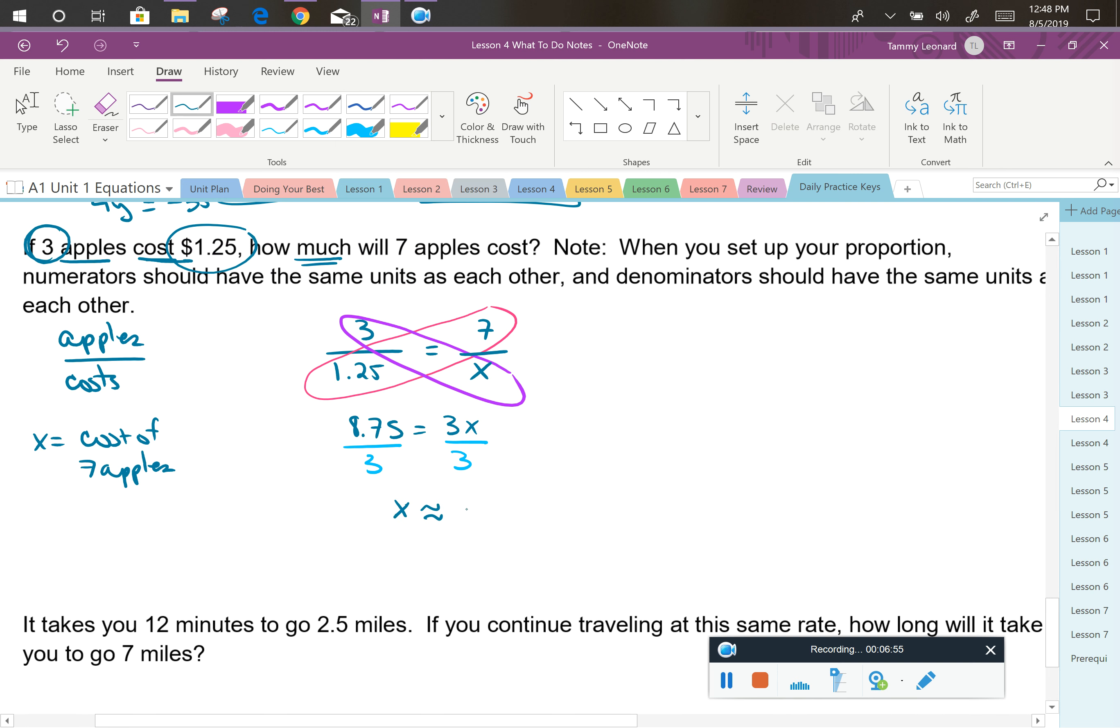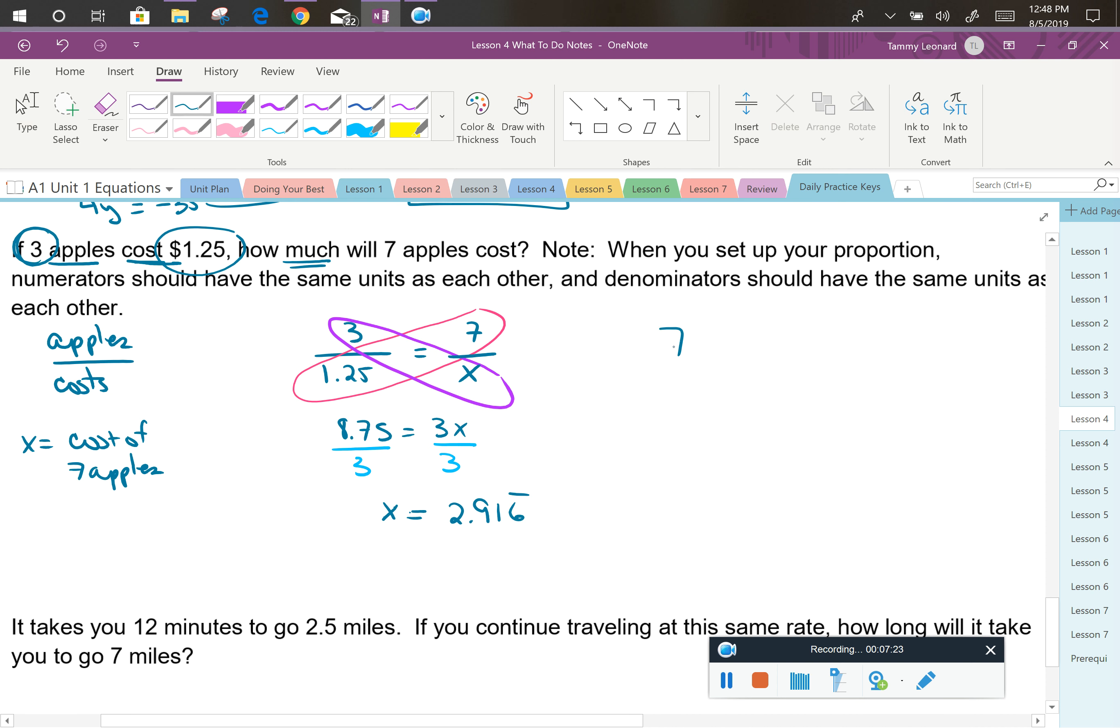I've got x is approximately equal to 2.91. Now, actually, it's which over equals if I allow for the repeating on the 6, because it's 2.91 and then 6 repeats. Now, we're talking about total cost, and we're talking about going to the store. So we need to make sure that the answer we give is what would actually happen when we went to the store. You know, a 6 is going to round that 1 up to a 2, because money is always rounded to the nearest hundredth. So we can say that 7 apples will cost $2.92.